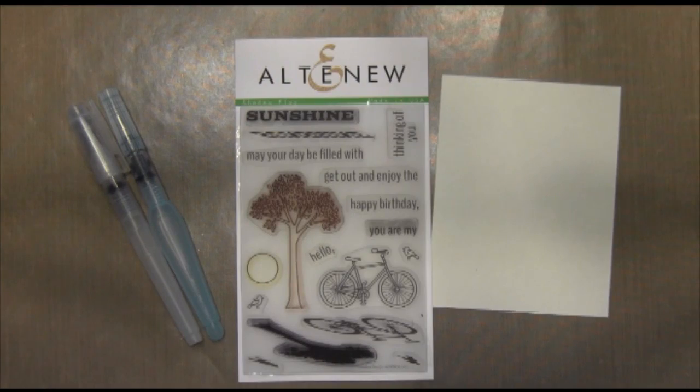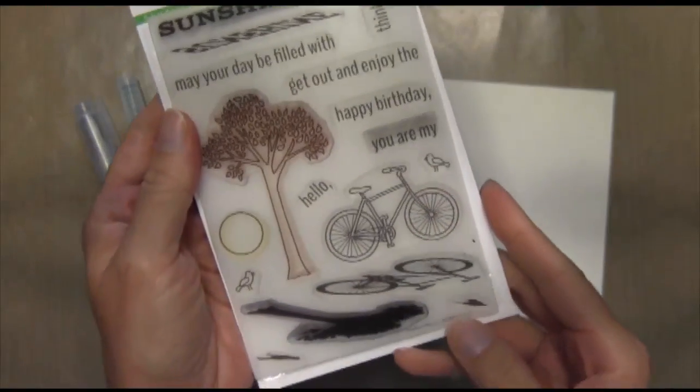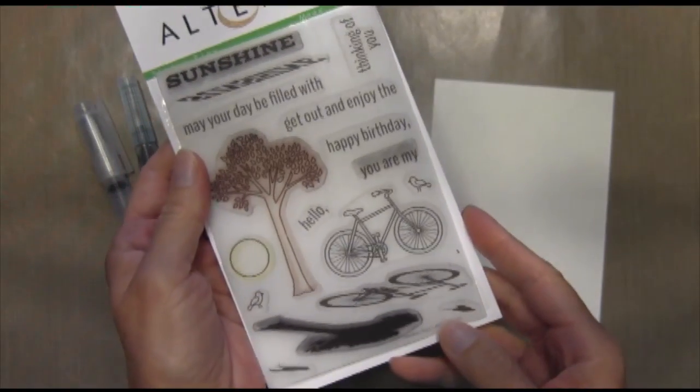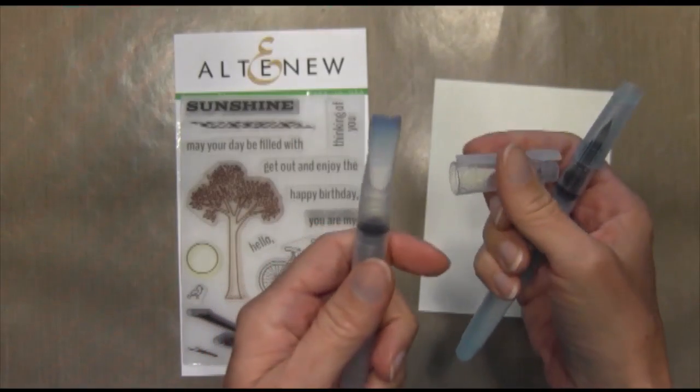Today I'm going to be using a new set by Altenew called Shadow Play. I absolutely love this set. It's got some really cute stamps. It's got these two shadows with the bicycle and the tree and also the word sunshine. It's got some great sentiments.